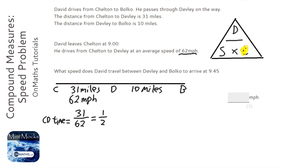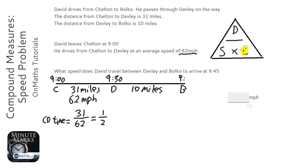So we know if it's 9 o'clock here, that he leaves Chilton, he'll be at Devley at 9:30. Now the question says, how quick does he have to go to get there for 9:45?